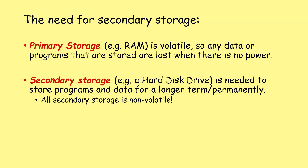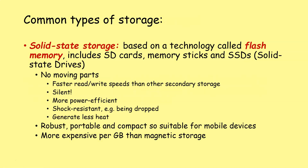First, the need for secondary storage. Primary storage, for example your RAM, your main memory, is volatile, so any data and programs that are stored are lost when there is no power. However, secondary storage devices — for example your hard disk drive — are needed so that you can store programs and data long-term or permanently. All secondary storage devices are non-volatile. There are three types of secondary storage technology you need to know about: solid state, magnetic, and optical.